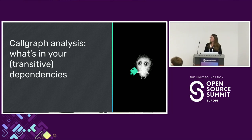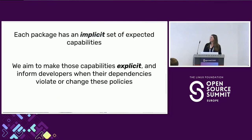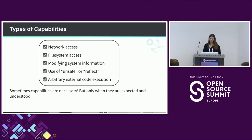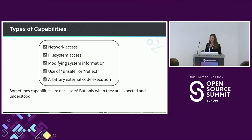So how can we identify what sort of capabilities are present in our transitive dependencies? Every package has an implicit set of expected capabilities — things it should be able to do. Our goal is to make that more explicit, to make it clear what the code is actually doing in practice, and to make sure developers can make informed decisions about whether that violates their expectations on an ongoing basis. We're trying to increase the visibility and transparency around what capabilities are present in code. This ties back to the mobile phone analogy.